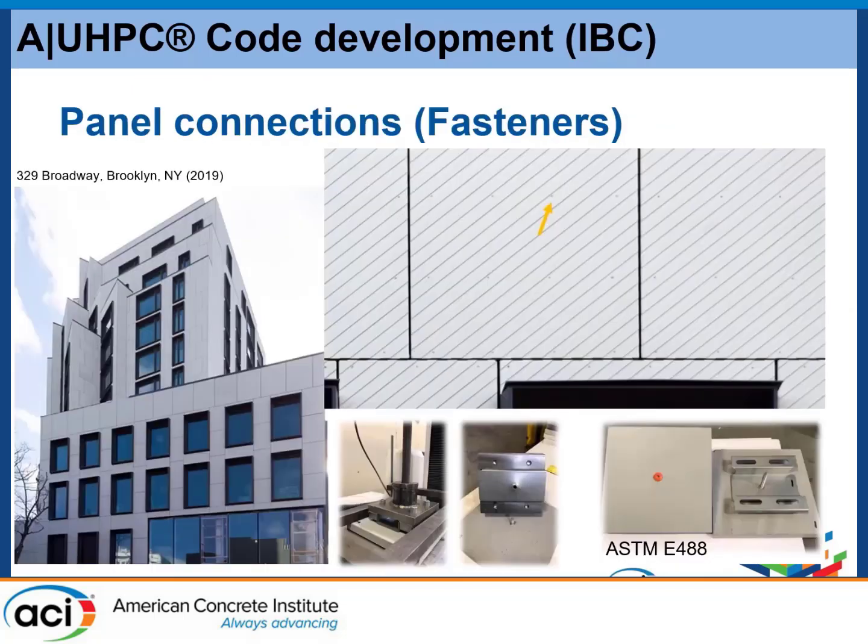Regarding anchors, you can anchor your panel to the facade using a hat channel — you have the panel, a hat channel, then a fastener screwed through the panel. The main finding is that the panel itself never fails in this system. It is normally the screw or the hat channel that fails in tension or shear. This is per ASTM E488 standard, which is inside the acceptance criteria within the building code.